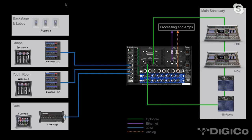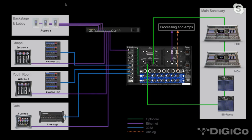Now we need control. Control in this case is going to be in-wall Decorah controllers for the backstage and lobby — those are PoE-powered and sit on a traditional network. We have an A-Control 8 in the chapel and the youth room — that's eight motorized faders connected via PoE+. And then we have a smaller, more portable compact unit called the A-Control 6 in the cafe. All of this is wired together. Now we can take control of the mic pre's in the chapel, the youth room, and the cafe directly from the main sanctuary.